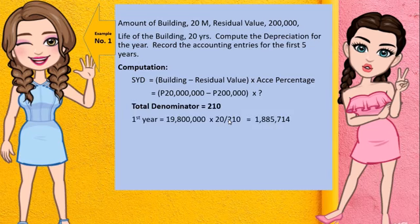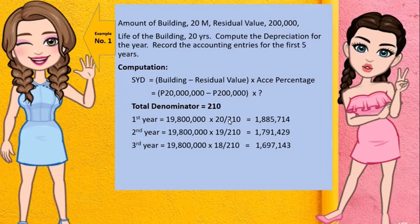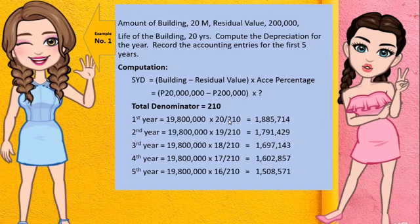With a denominator of 210, for the first year you have 19,800,000 times 20 over 210. Second year is 19,800,000 times 19 over 210. For the third year, 19,800,000 times 18 over 210. For the fourth year, 19,800,000 times 17 over 210. And for the fifth year, 19,800,000 times 16 over 210.